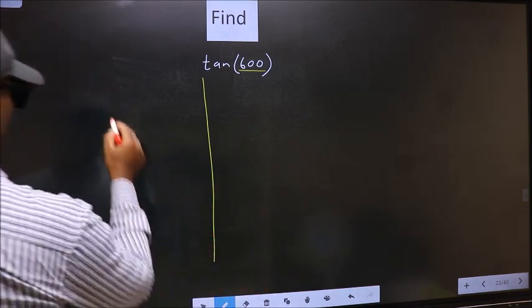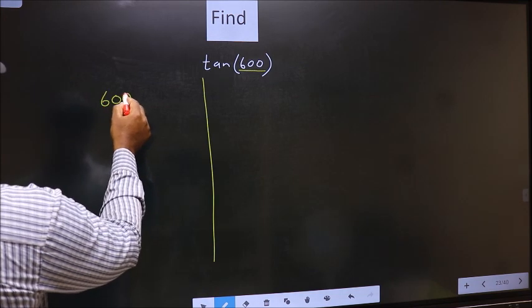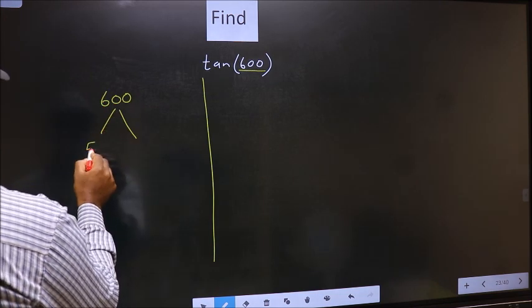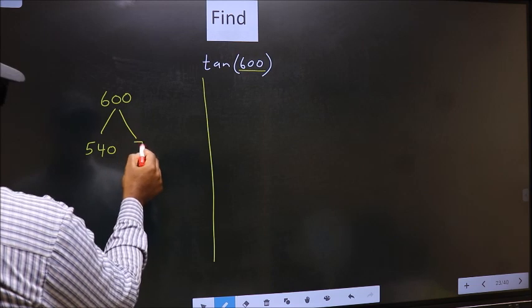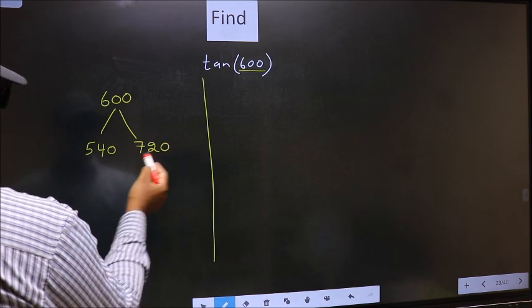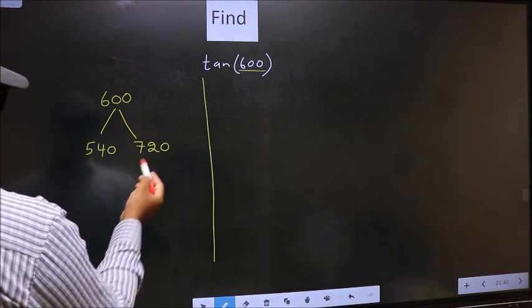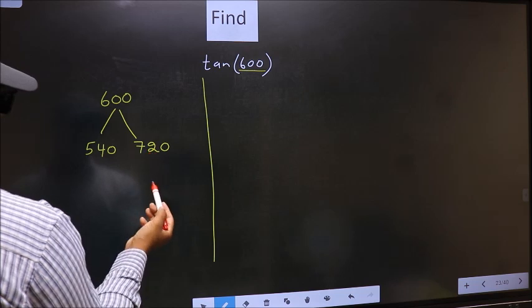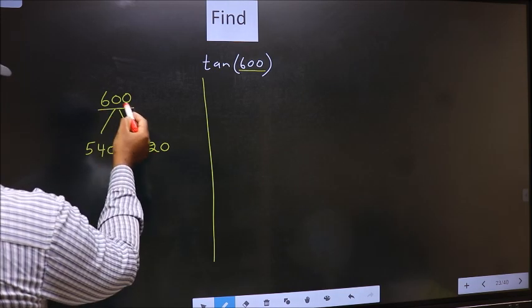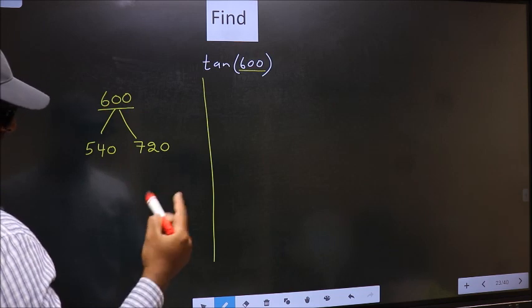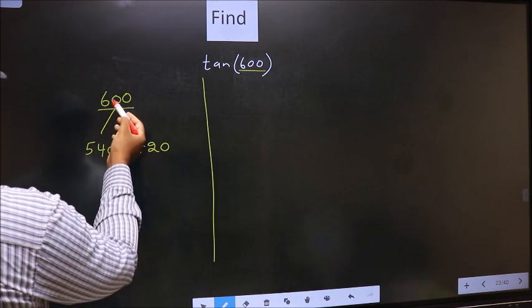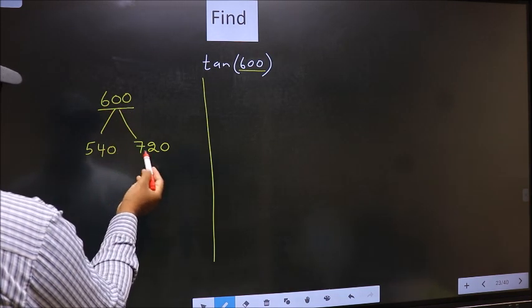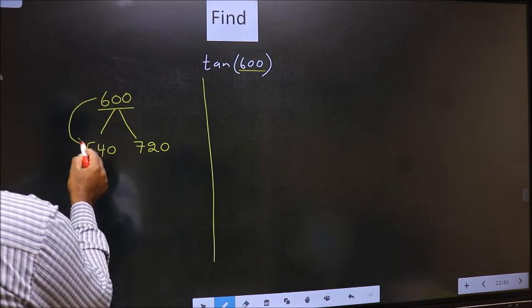600 lies between 540 and 720. This is 180 times 3, and this is 180 times 4. Between these two numbers, 600 lies. Next, 600 is close to which number? This is close to 540.